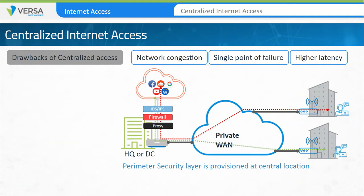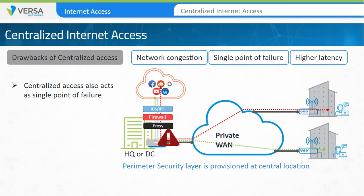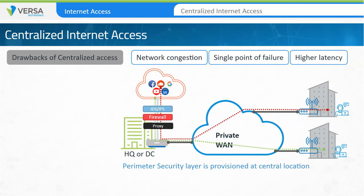Centralized internet access also acts as a single point of failure. Failure of internet service at the central site also results in internet services being interrupted at remote sites. The traffic path from a source to a destination can have a large impact on application performance due to increased latency.